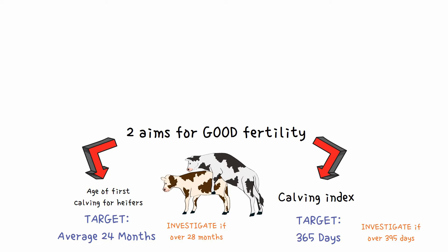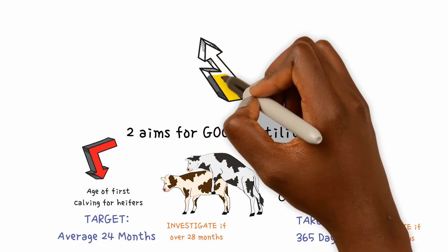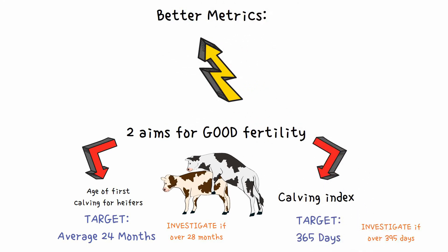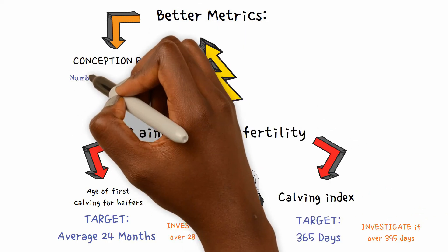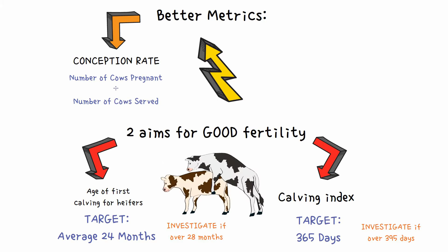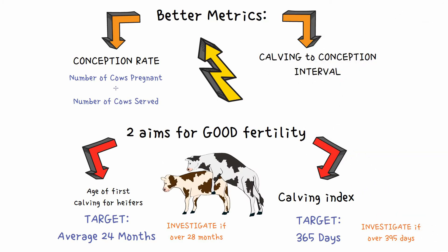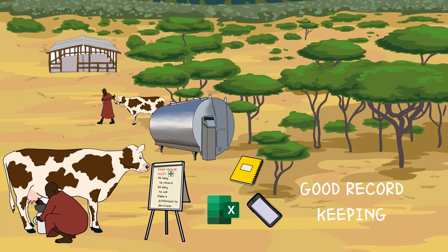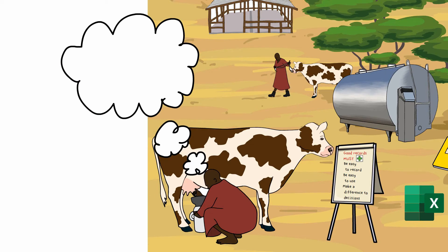Both of these are historical, representing what has happened in the past, and when measured and reported cannot be changed. By measuring growth rates of heifers and at what age they are served, interventions can be made if necessary. As the calving index is always at least a year out of date, better metrics that allow farmers and advisors to respond are the conception rate — the number of cows that are pregnant divided by the number of cows that were served — and the calving-to-conception interval. A similar measure expressed differently is the number of services per pregnancy. Prompt record keeping helps the farmer identify which cows may be coming into oestrus and which animals have been served by which bull, to prevent future inbreeding.